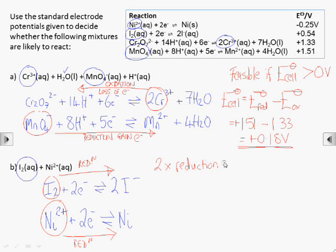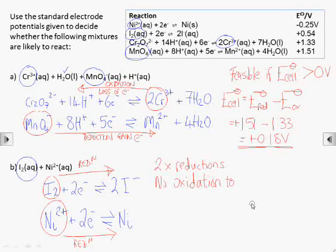So if we mix these together no reaction is possible because there is no oxidation to supply the electrons needed to reduce either of these two species. There is no point in going any further. Without an oxidation reaction we don't have an electrode potential for the oxidation, so we can't calculate a cell potential.